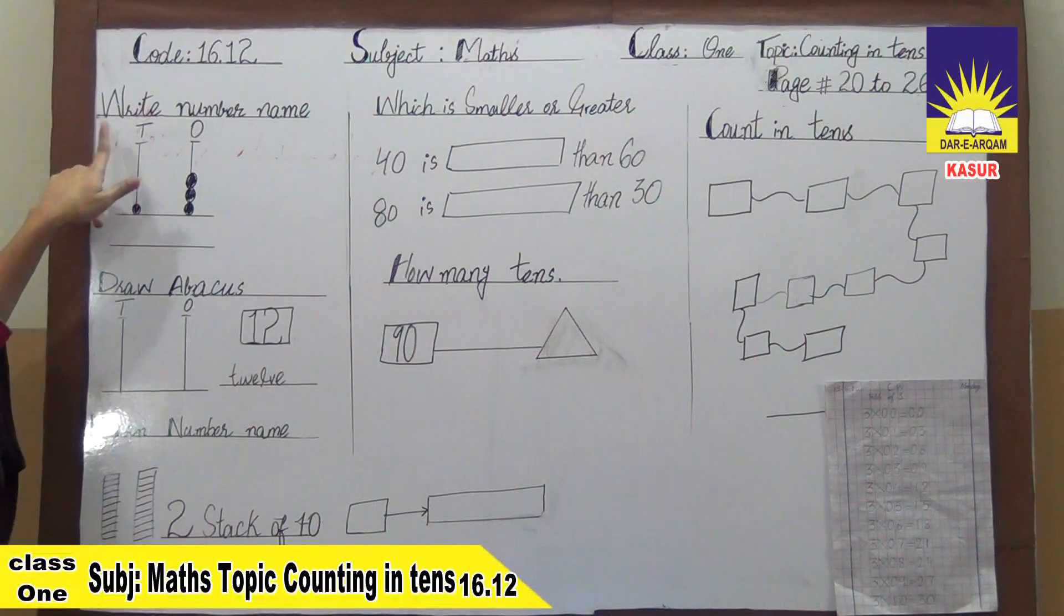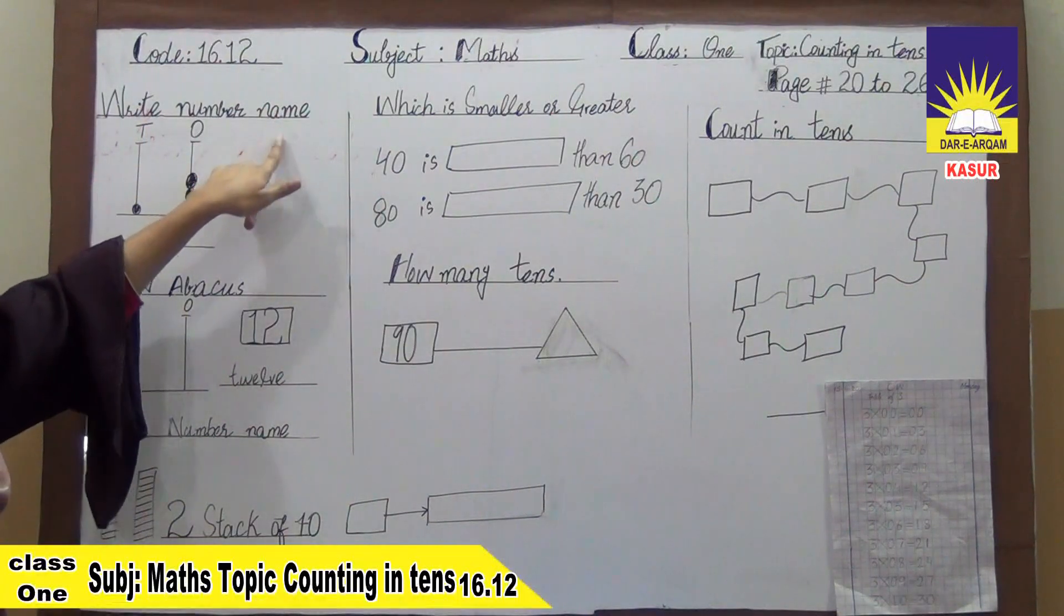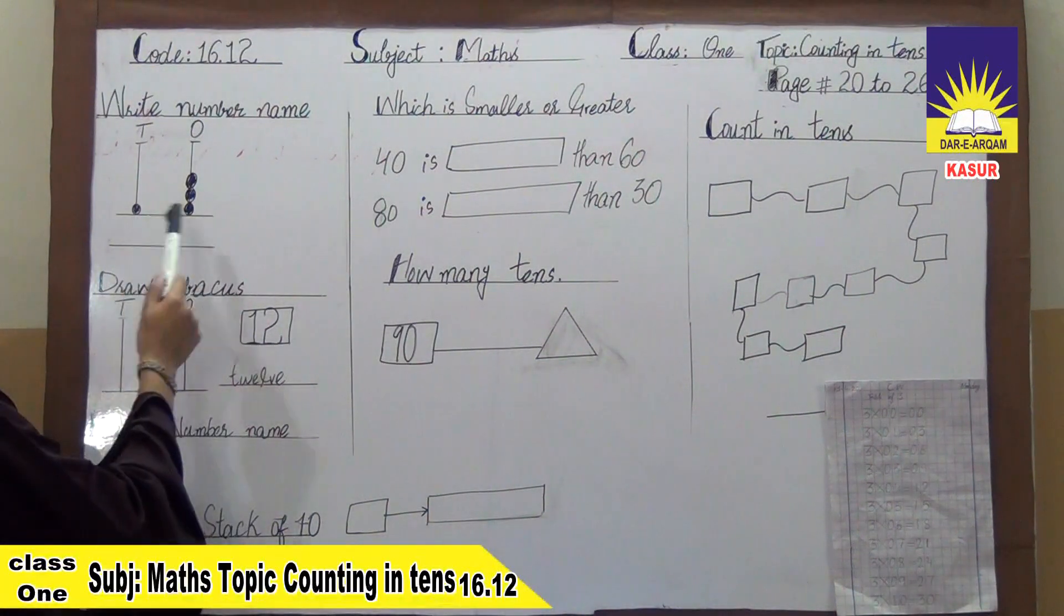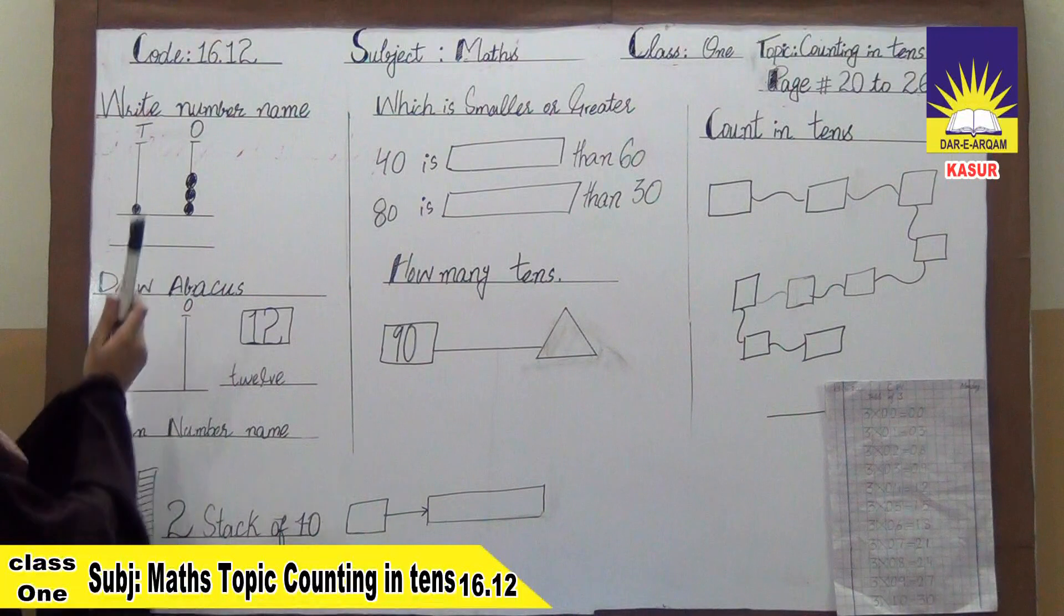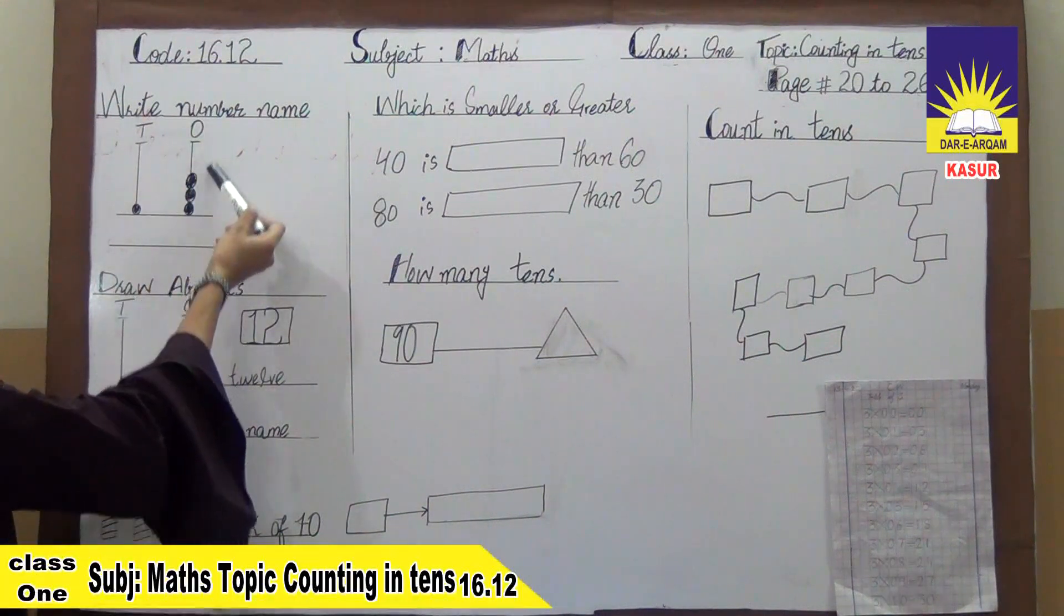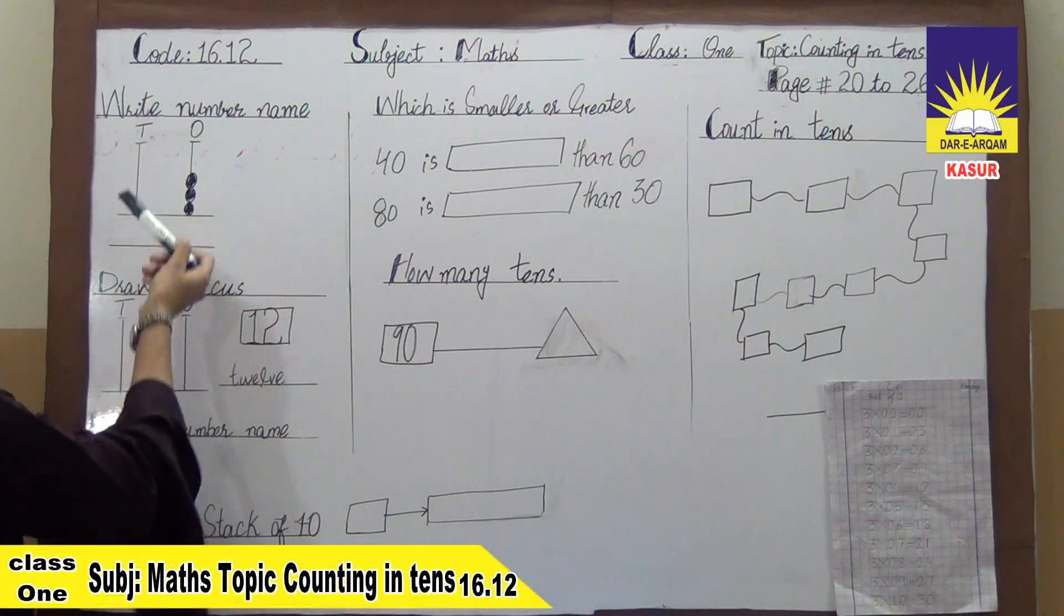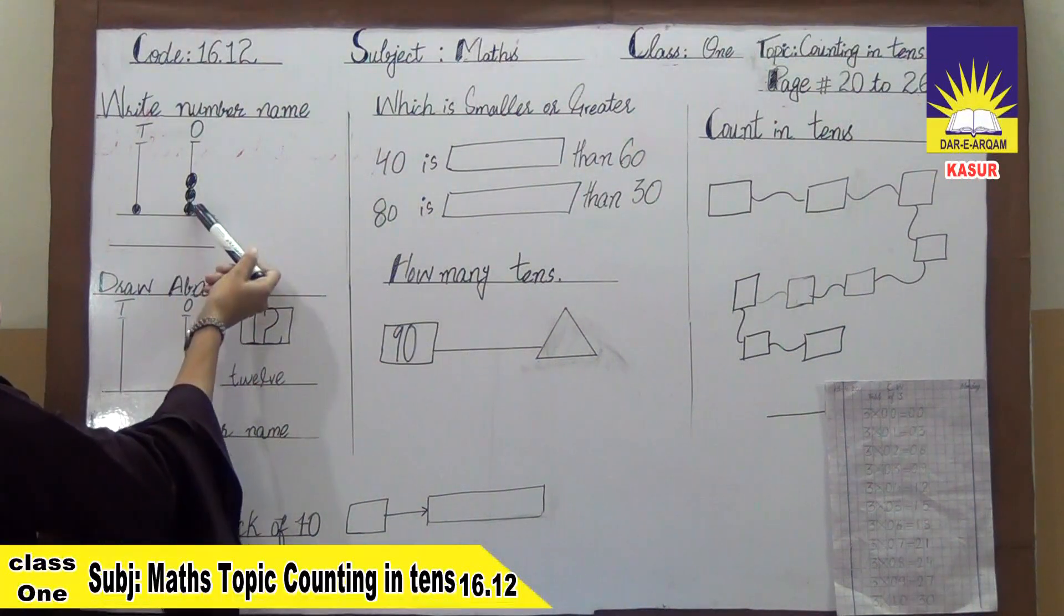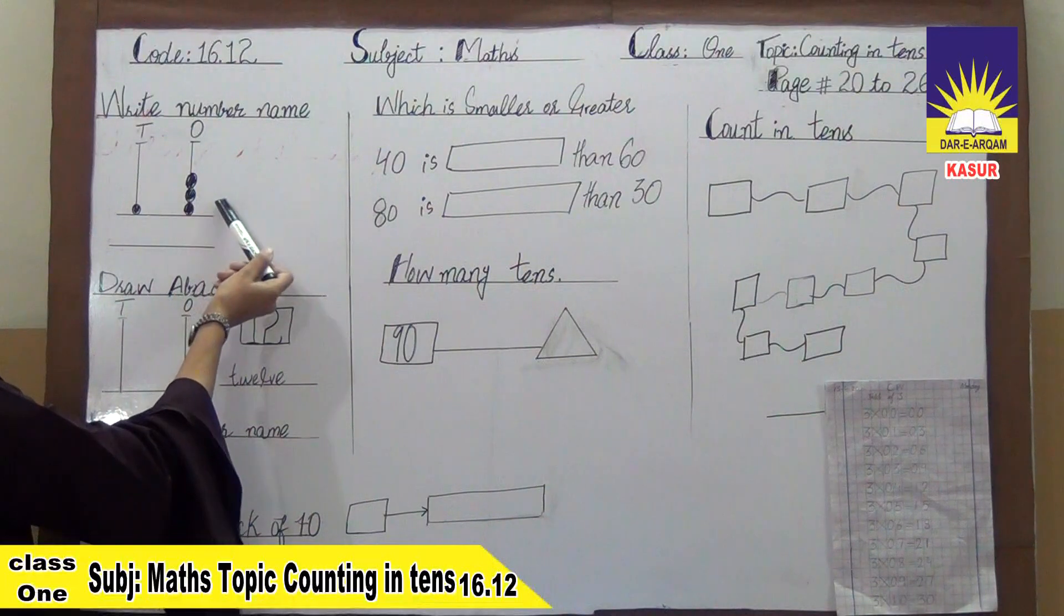In this question, we need to name numbers. We need to use counting in words. Let's look at how many bubbles are here. First we will count our bubbles. This is 10's line and this is 1's line. In 10's we have 1 bubble and 1's we have 3 bubbles. So we will count 1 and 3. This is 1 and 3, 13.